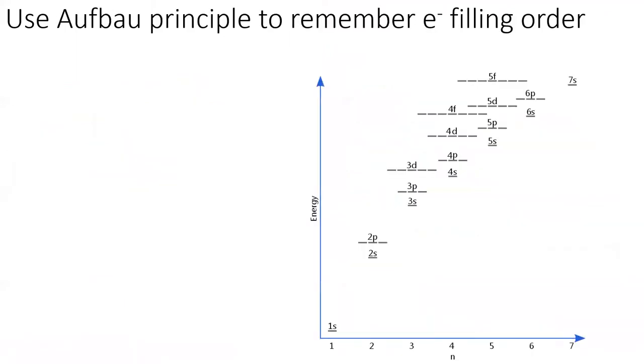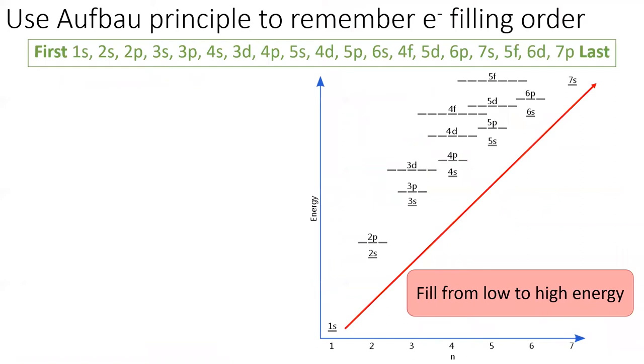To the right is an expanded energy level diagram showing the orbitals for the first 19 subshells. These contain a total of 51 orbitals, which can hold a total of 102 electrons. Next section will fill up the orbitals with electrons starting at the lowest energy level.